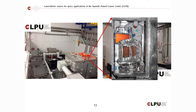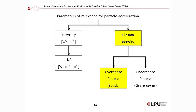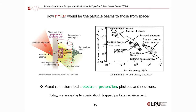This gives an order of magnitude for the dimensions of the chamber and the diffraction gratings for the CPA technique. Now, the first key question for this community: how similar will the particle beam be to those relevant for space applications? Space radiation is really complex — there are many different particles with a very broad spread of energy ranges.